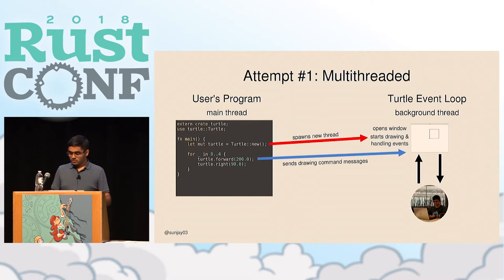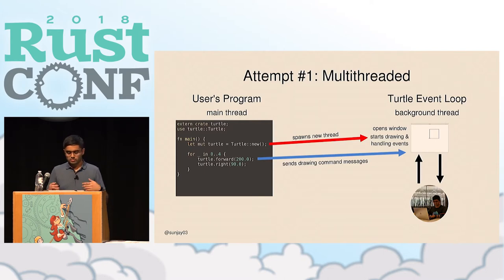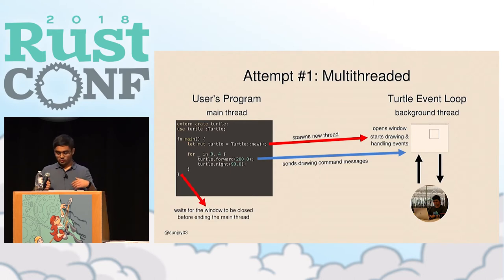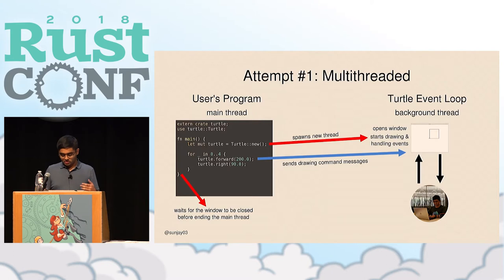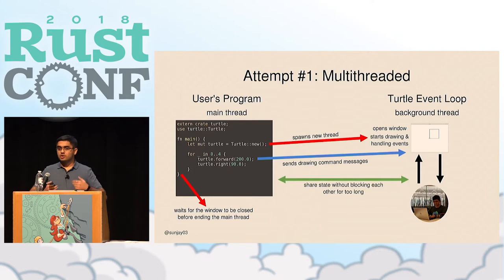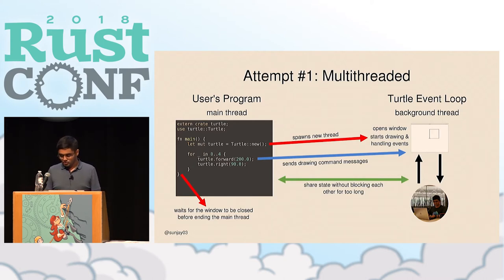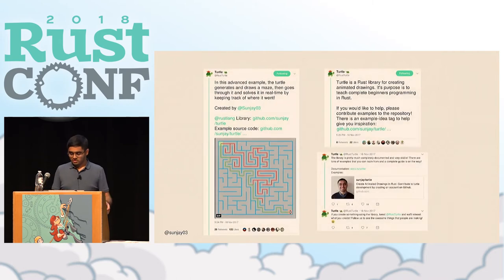Since all that is going on in a separate thread, the user's program is able to run normally on the main thread. When you call methods like turtle.forward or turtle.right, the main thread sends a message to the event loop thread. The threads communicate back and forth to do drawing and handle events, and this is a great and relatively straightforward way to accomplish our goal of hiding the complicated event loop details. When the Turtle goes out of scope, we wait for the window to be closed and then end the main thread.